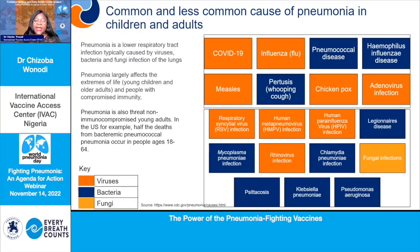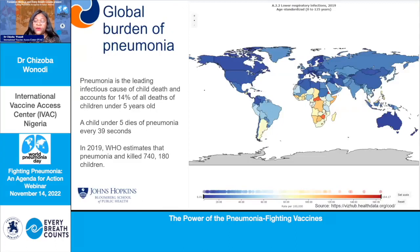Viral pneumonias and bacterial pneumonias are the commonest. As Dr. McCulloch said earlier, pneumonia affects largely individuals in the extremes of life. But we can't forget that even among non-immunocompromised healthy adults, pneumonia can be a threat. In the U.S., for example, half of the deaths from bacterial and pneumococcal pneumonia occur in people ages 18 to 64, which really brings home the life-course perspective of pneumonia.